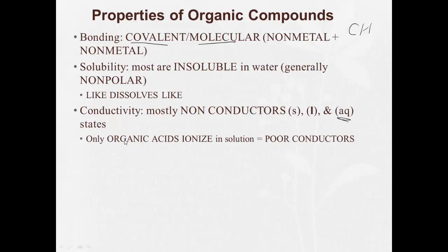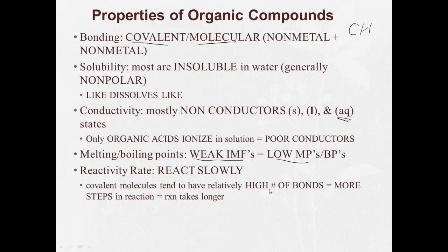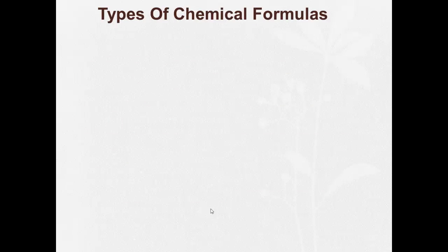There's one type we'll learn about called organic acids. They'll ionize in solution, but they still tend to be poor conductors. They tend to have weak intermolecular forces, which lead to low melting and boiling points. They tend to react slowly. Covalent molecules tend to have relatively high numbers of bonds, so there's going to be more steps in reaction, so any reactions with organic compounds take much longer.